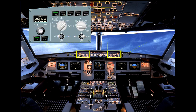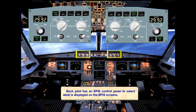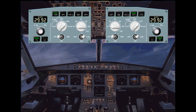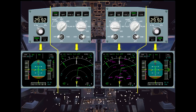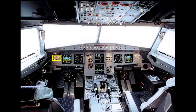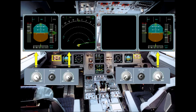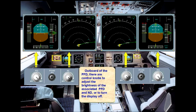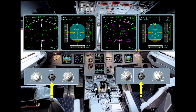Each pilot has an EFIS control panel to select what is displayed on the EFIS screens. The EFIS control panels are divided into two sections: one section associated with the PFD and the other with the ND. Outboard of the PFD, there are control knobs to adjust the brightness of the associated PFD and ND, or to turn the display off. A switch is provided to allow the information on the PFD and ND displays to be transferred.